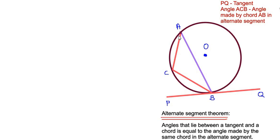In this diagram I have drawn a circle where PBQ is acting as a tangent and AB is a chord. If the chord makes an angle of x degrees with the tangent, then the same chord making an angle in the alternate segment of the circle means that angle C is also going to be equal to x degrees.